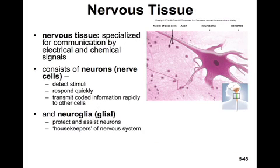Nervous tissue is specialized for communication by electrical and chemical signals. They'll conduct electrical signals along their lengths and then communicate with other neurons through chemical signals at the synapse. They consist of neurons, or nerve cells, which detect stimuli, respond quickly, and transmit coded information to other cells. There are also neuroglia — a huge family of cells that act in support of nerve cells, protecting and assisting the neurons. They're basically the housekeepers of the nervous system.